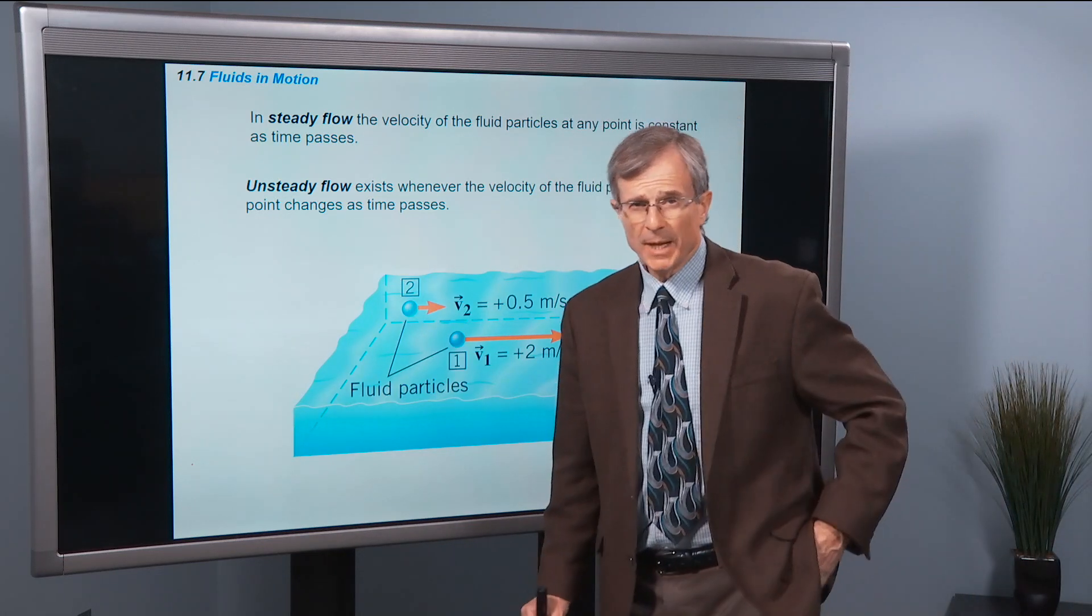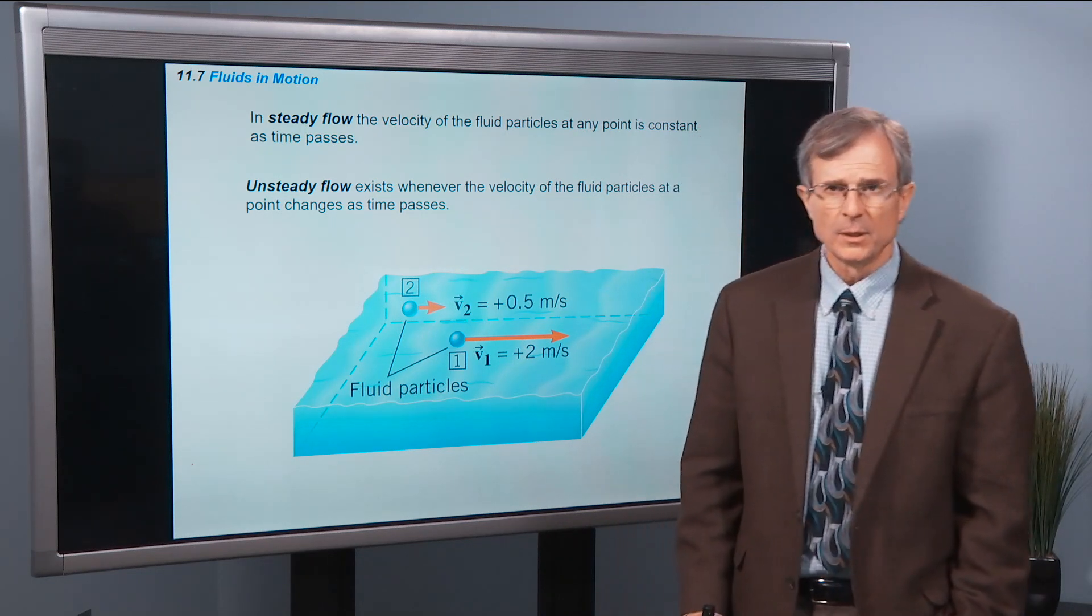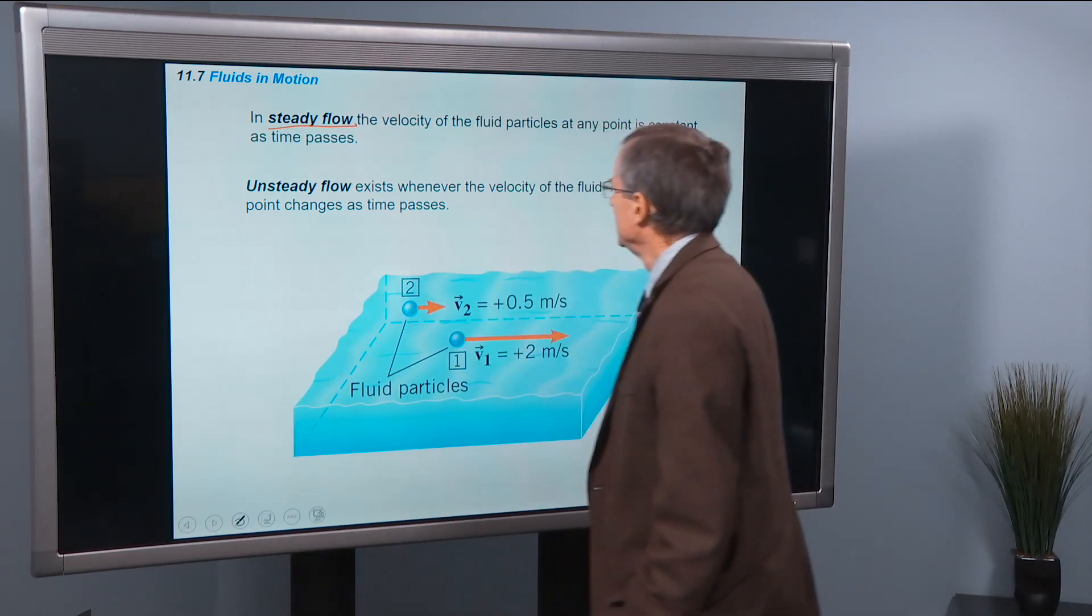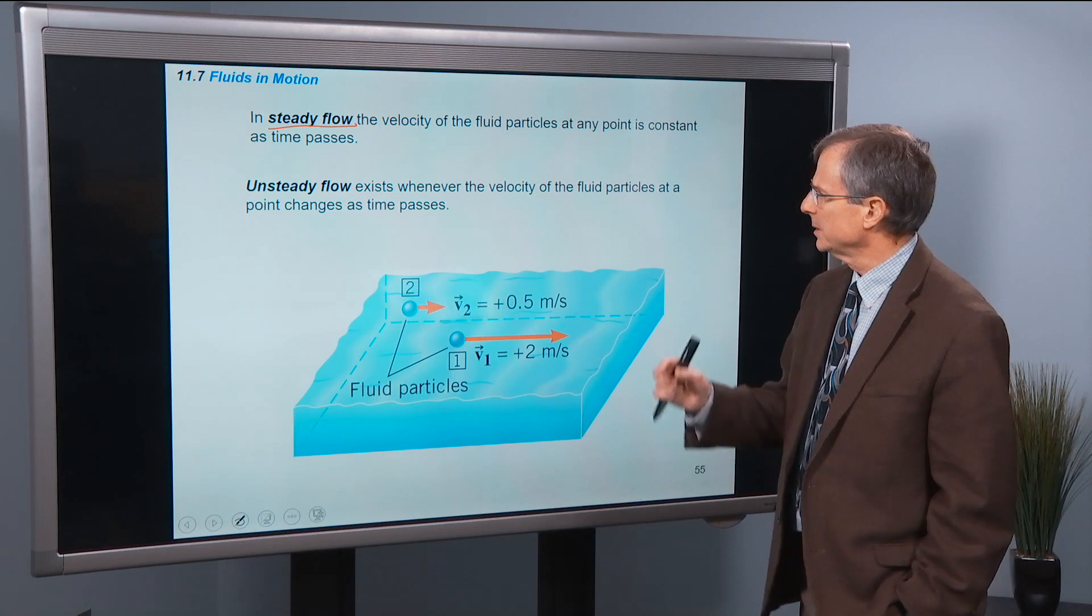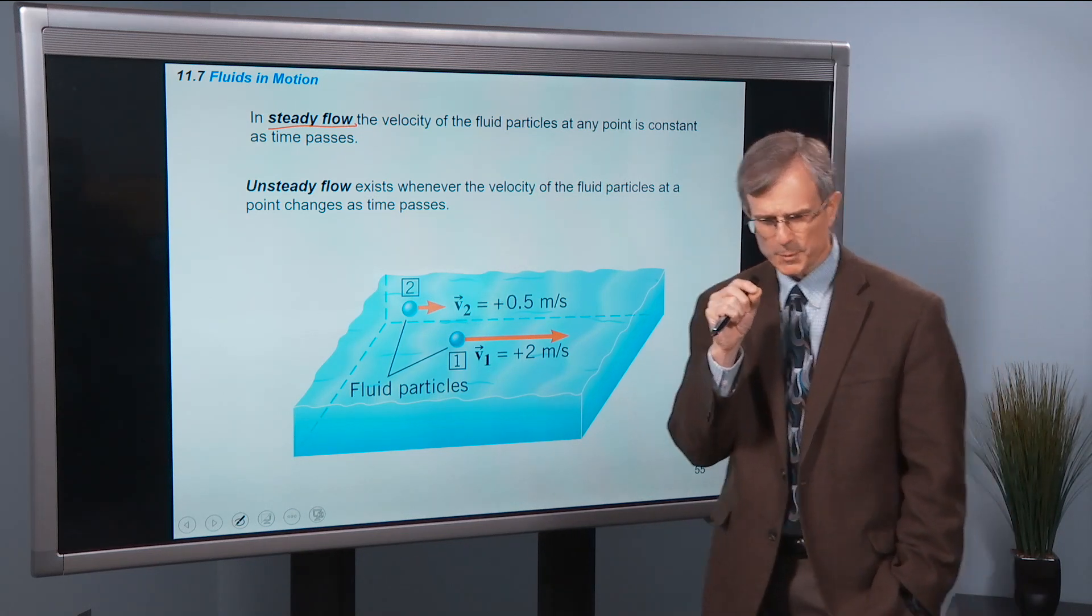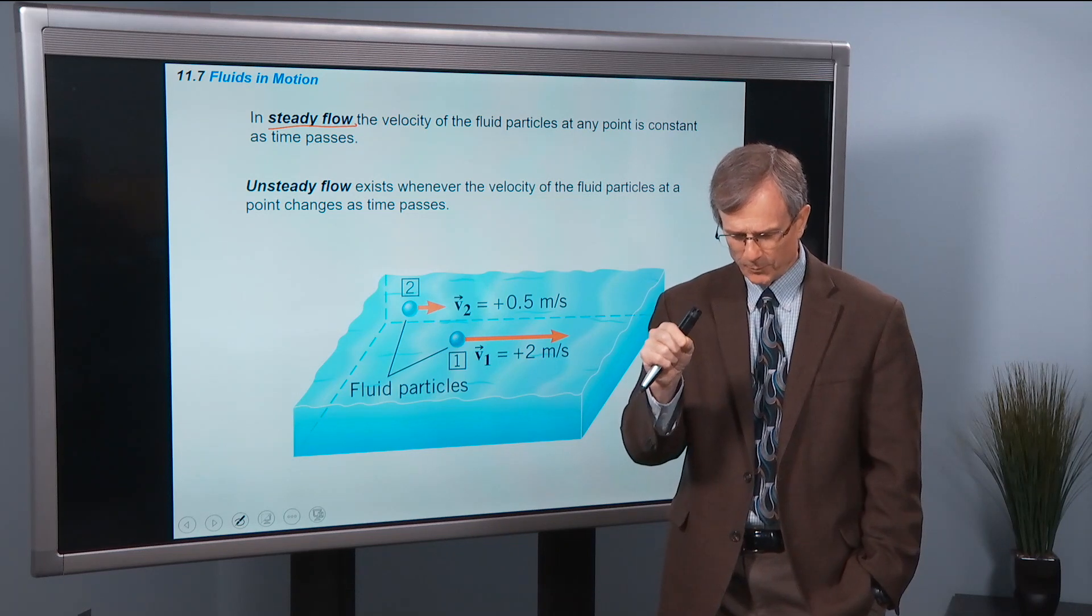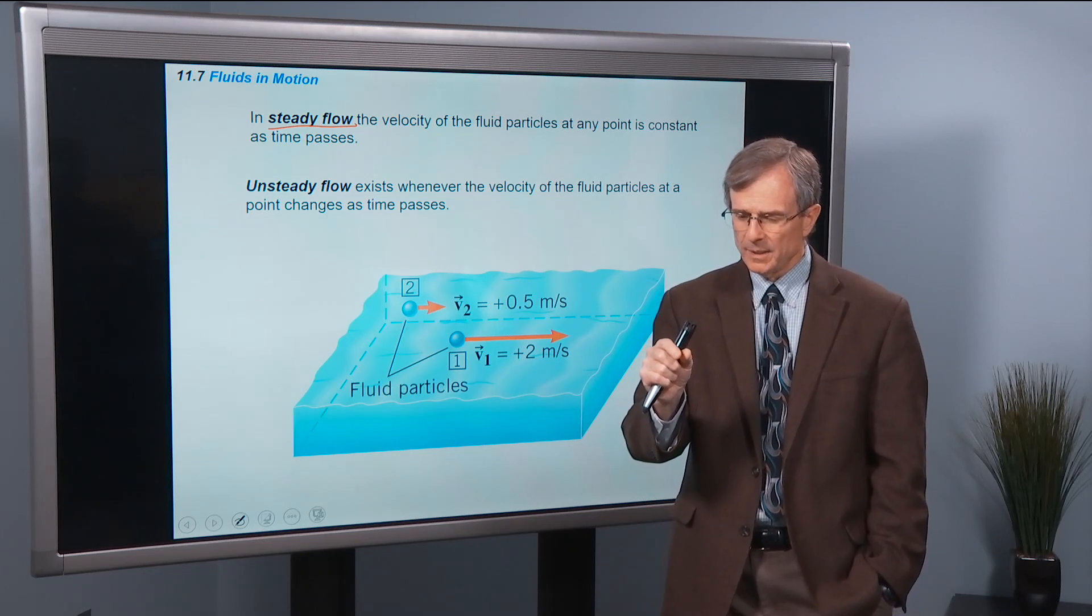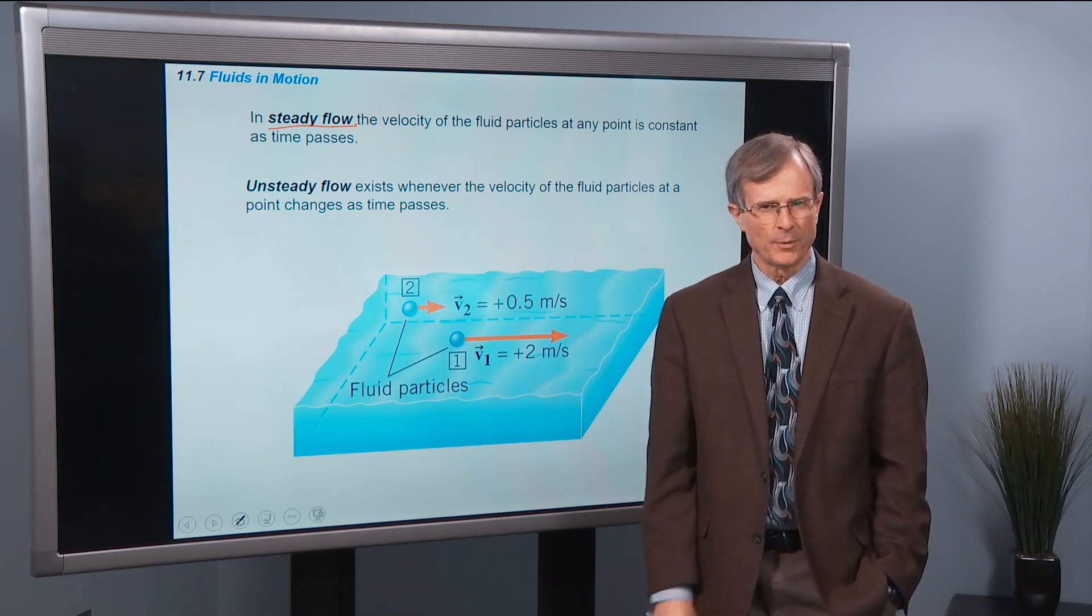The two types of flow, we will concern ourselves here with what's called steady flow. In steady flow, if you look at one particular spot, think of a river moving downstream, and you look at one spot in the river, above a stone in the bottom, for example, the velocity is always the same at that particular point in the river.